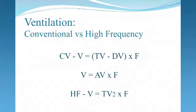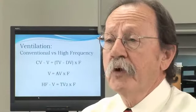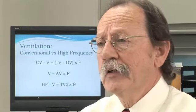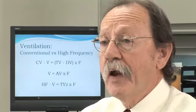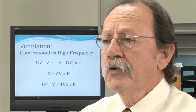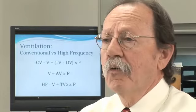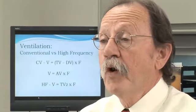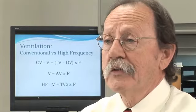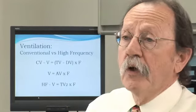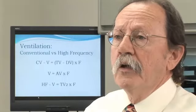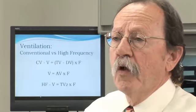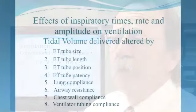The key difference between conventional and high-frequency ventilation is that conventional ventilation is alveolar volume times frequency, whereas high-frequency ventilation is tidal volume squared times frequency. This demonstrates that while high-frequency uses small tidal volumes, the tidal volume is more important to high-frequency than to conventional ventilation because it's a squared number.